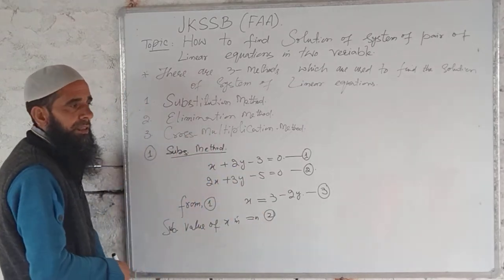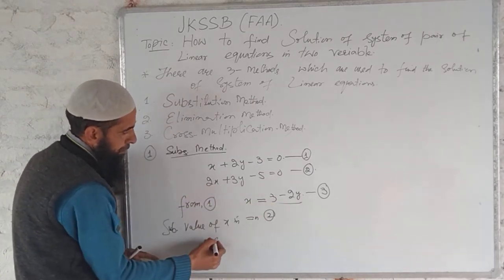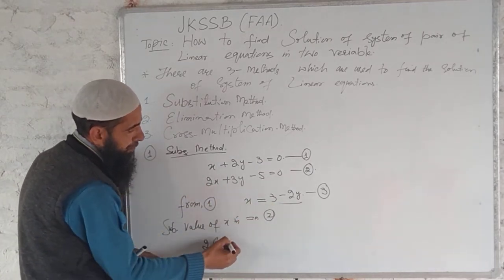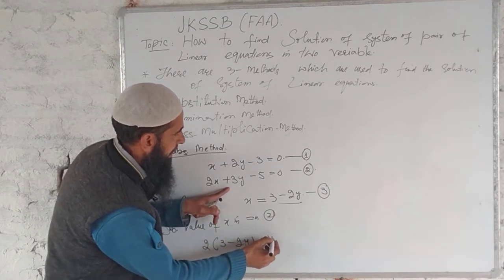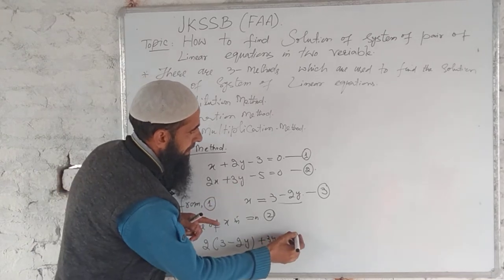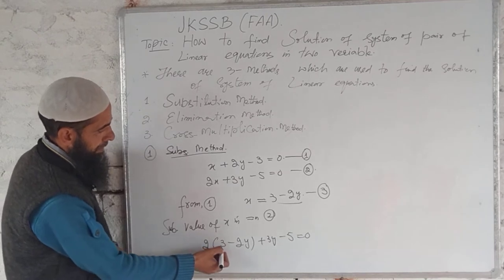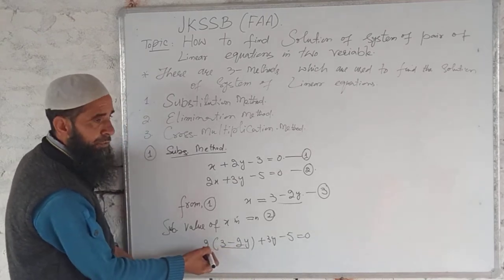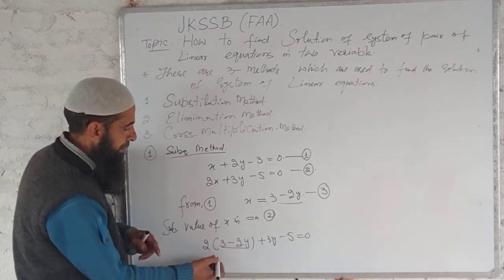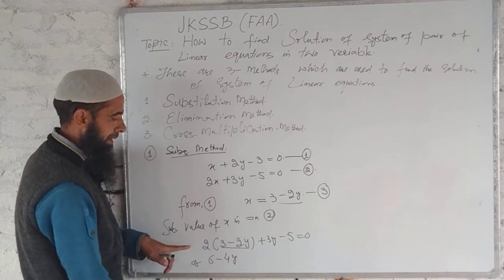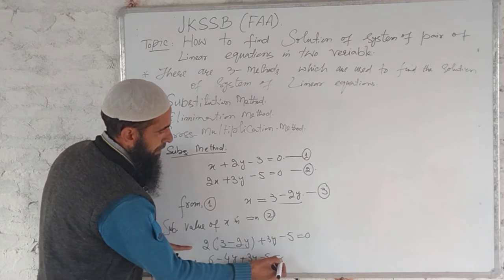In equation second we substitute value that is 2 times, x equals 3 minus 2y, plus 3y minus 5, it is equal to 0. Simplify this, multiply 3 minus 2y by 2, it becomes 2 into 3 that is 6, then 2 into minus 2y becomes minus 4y, then 3y minus 5, it is equal to 0.